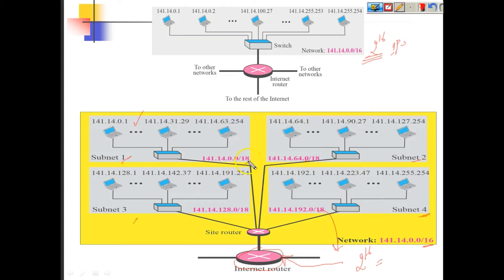So what is left? You have 14 bits left. Each block will have 2 power 14 IPs possible in their subnet.